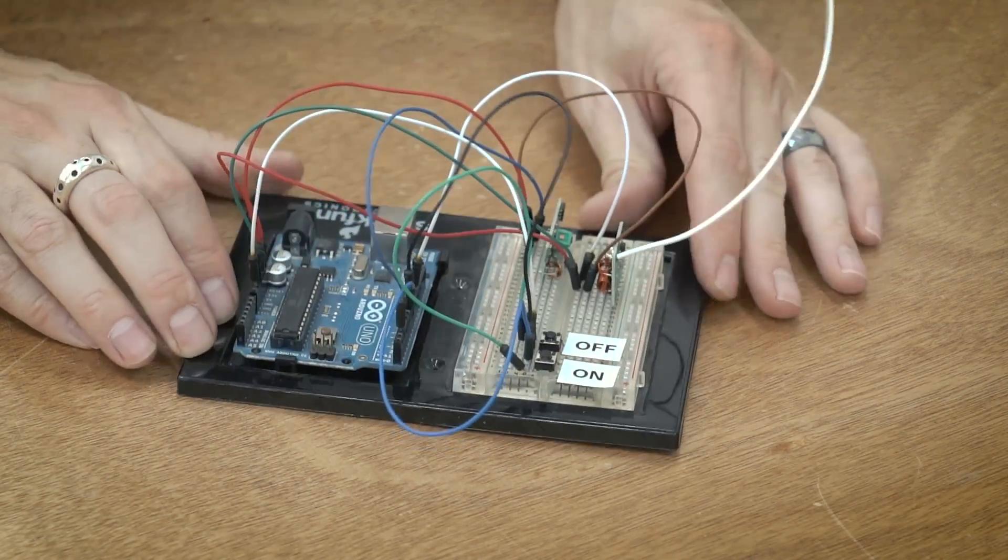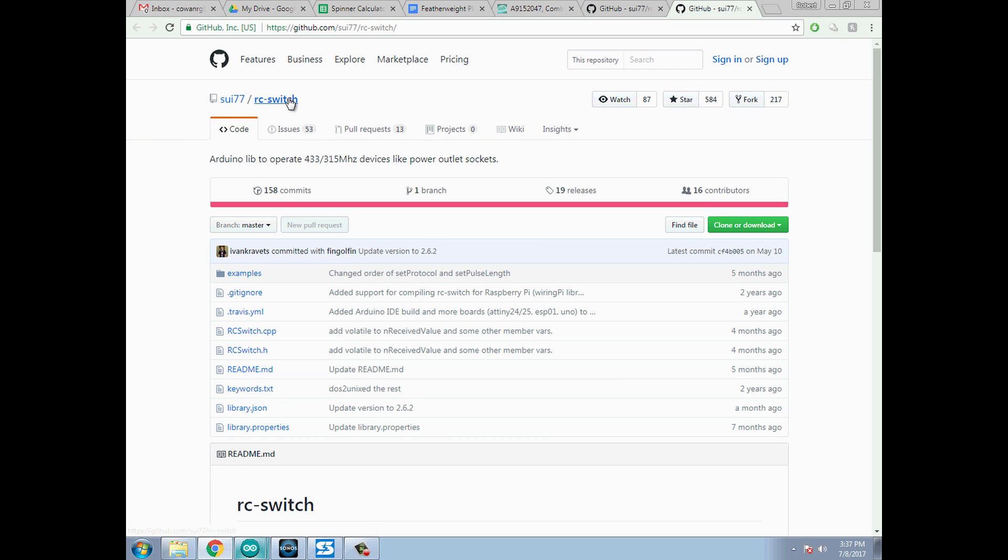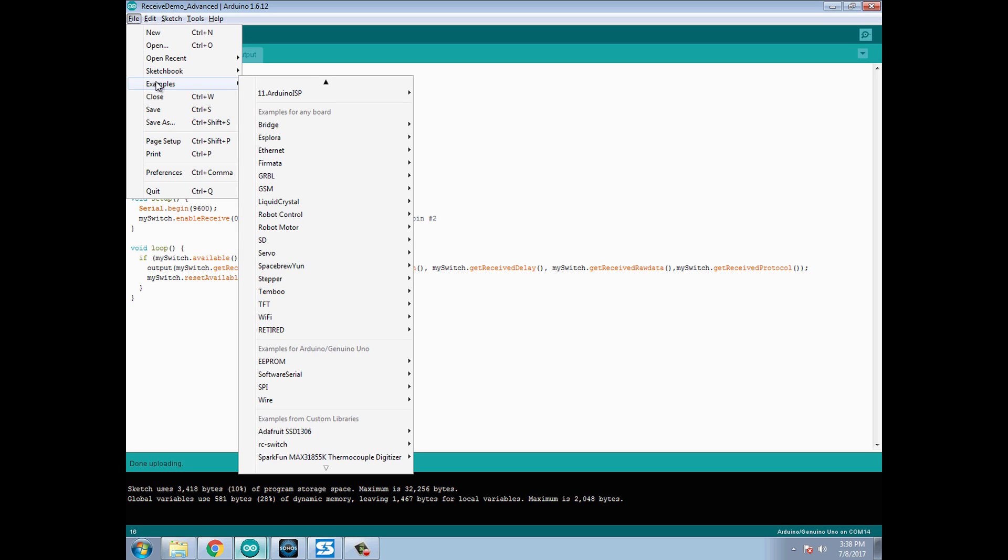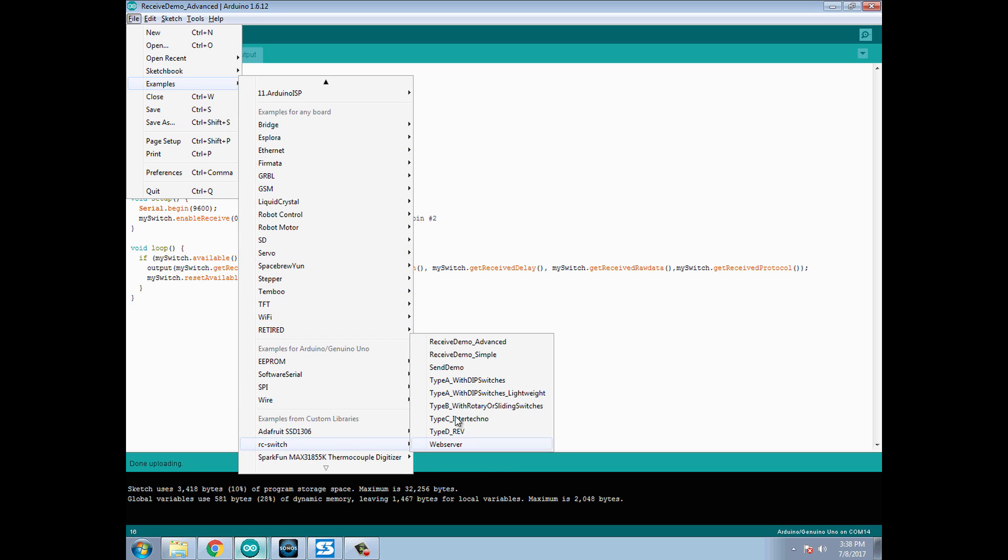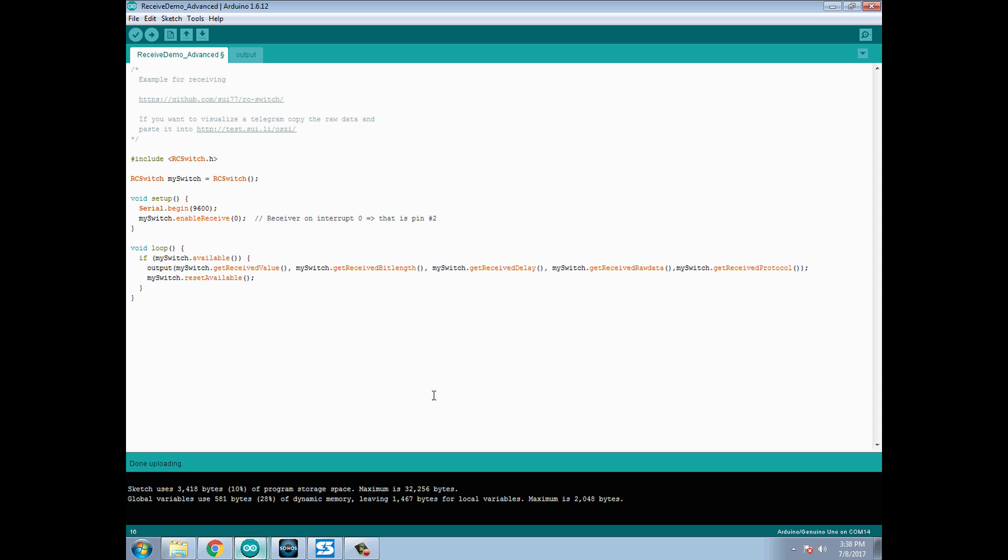So let's see what the code looks like. For the code I'm using this RCSwitch library. The first thing you need to do is go ahead and download this and install it in your Arduino IDE, and then once you get that installed we're just going to go down to examples, RCSwitch, and then I'm going to select the receiver demo advanced. Notice down here that we've got the myswitch enable receive on zero, which is interrupt zero, which means pin 2. So that means that your data pin on the receiver needs to be connected into pin 2.